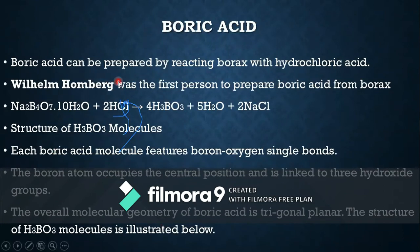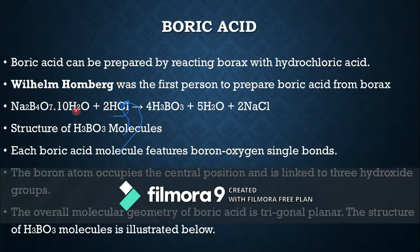Boric acid can be prepared by reacting borax with hydrochloric acid. The first method was discovered by William Homburg, the first person who prepared boric acid from hydrogen chloride. When HCl reacts with borax (Na₂B₄O₇·10H₂O — technical borax), it forms boric acid.